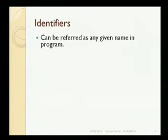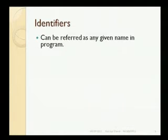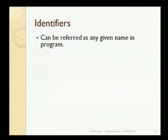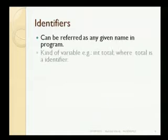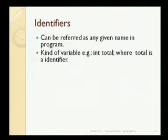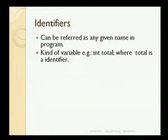Next is identifier. An identifier can be referred to as any name in a C program. Other than keywords and functions, if we write anything in a program, they are known as identifiers. Variables are a kind of identifier. For example, if we write 'int a', then A is known as an identifier. Similarly, 'int total' — here 'total' is an identifier. Integer is a data type, which we will look at further in the presentation.